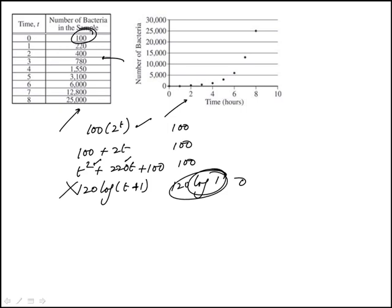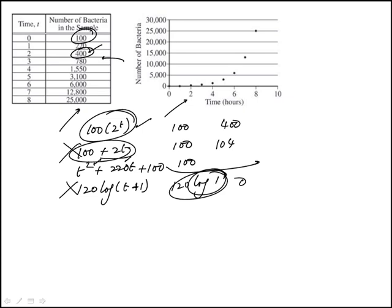Next, we consider t equal to 2. That gives 2 squared times 100, which is 400 — and one of the options matches this exactly. Another option gives only 104, so that one is also out. The third remaining choice gives approximately 544, so we can see that the exponential function 100 times 2 to the power of t is the closest match.